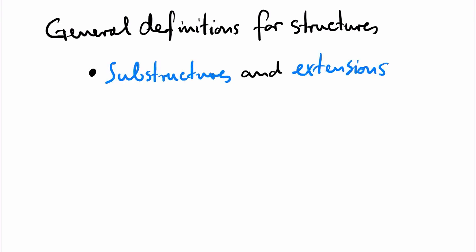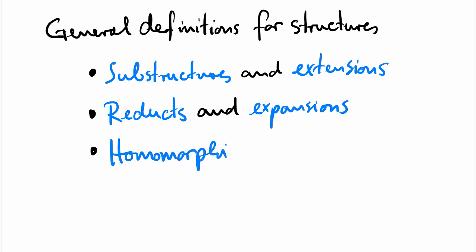We have a number of general definitions that work for all structures. We will define substructures and extensions, reducts and expansions, and homomorphisms. And we will discuss how these definitions specialize in our two running examples, graphs and groups.